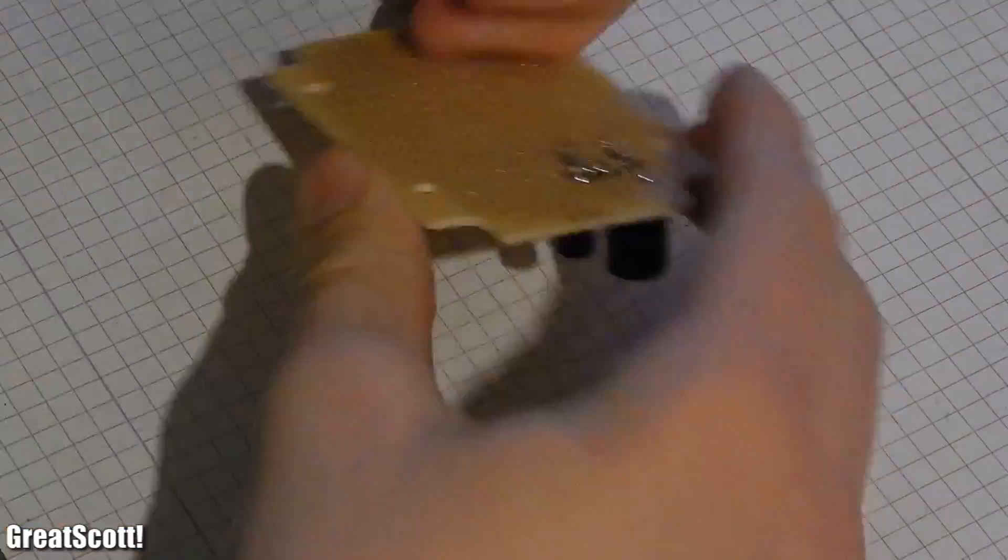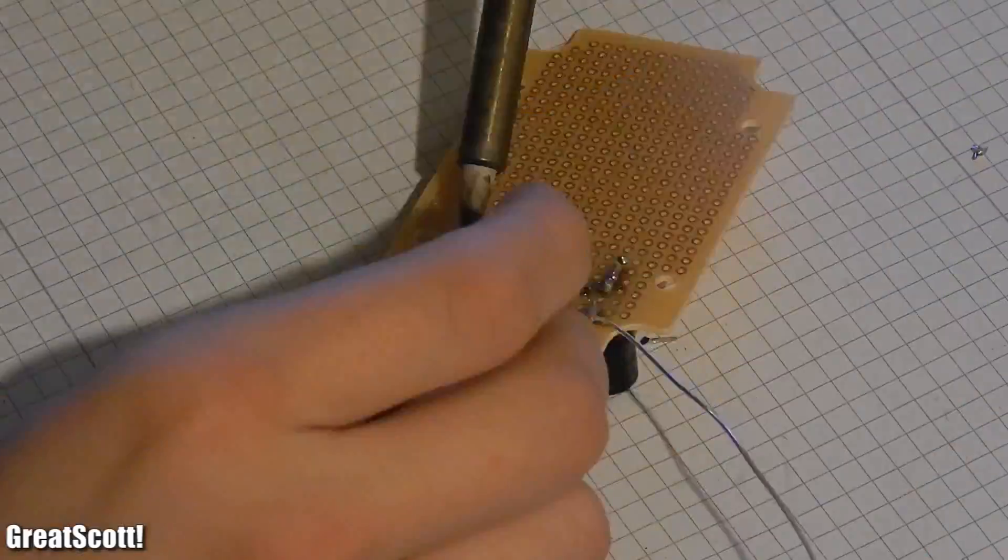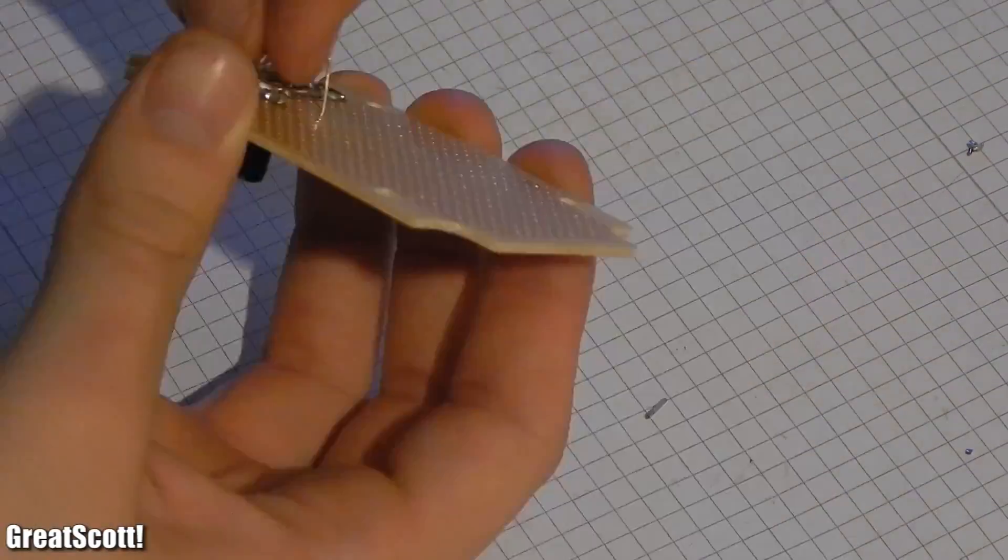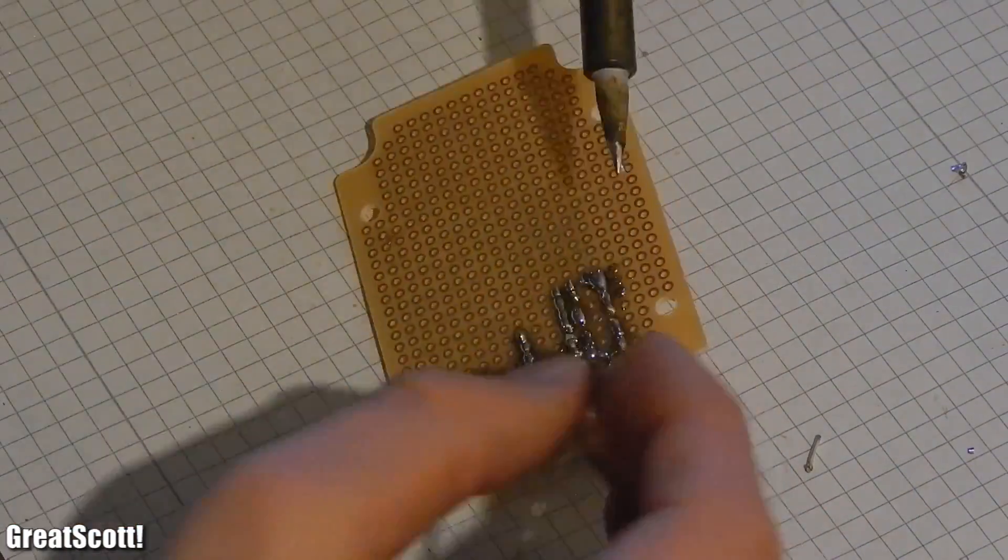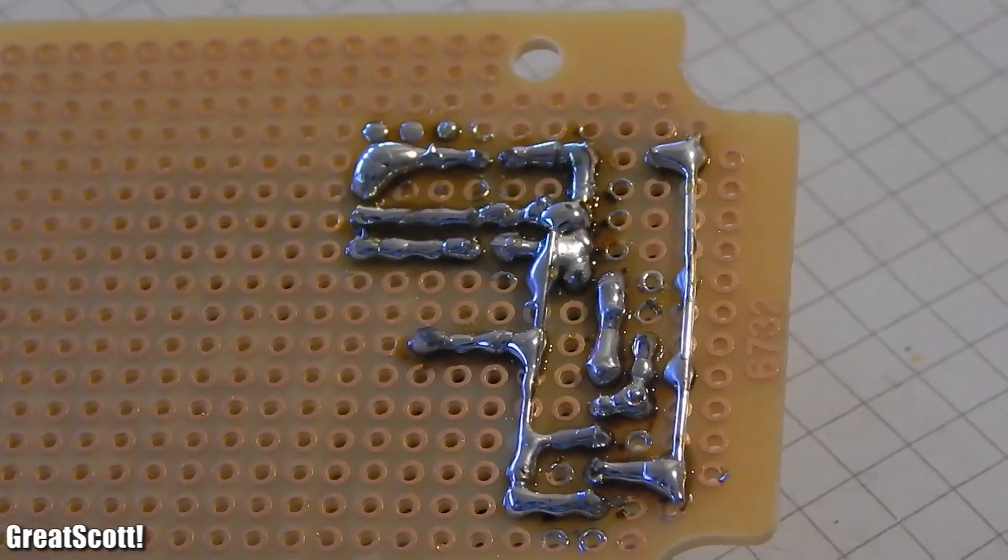We are almost done. Now we have to solder our components onto the PCB. Always look carefully at the schematic and check your connections twice when you think you are finished.